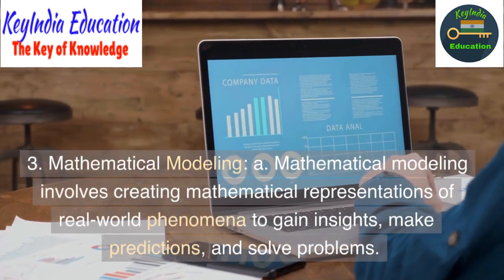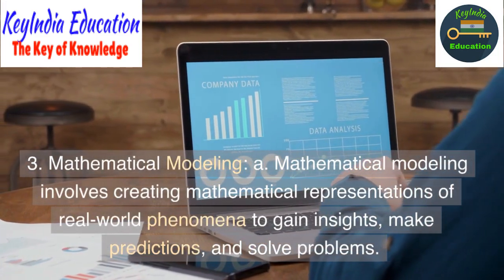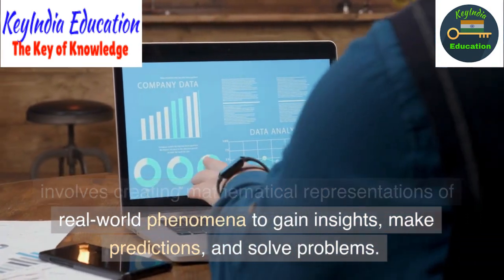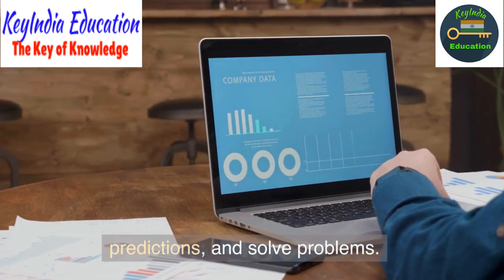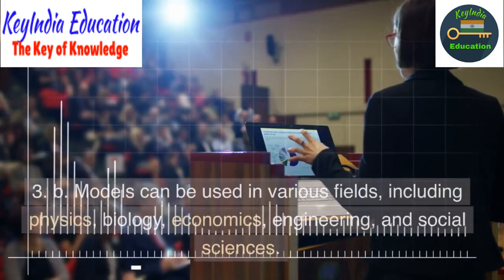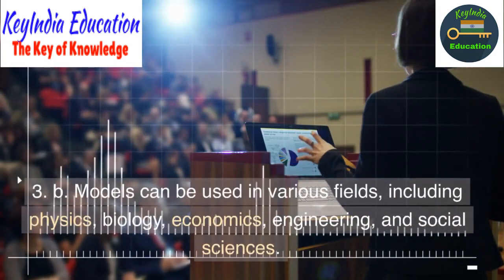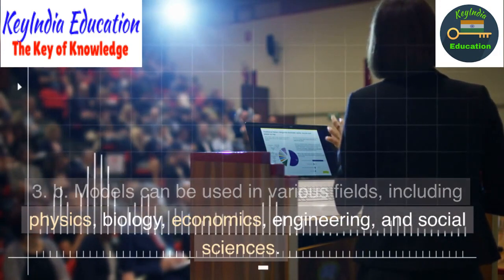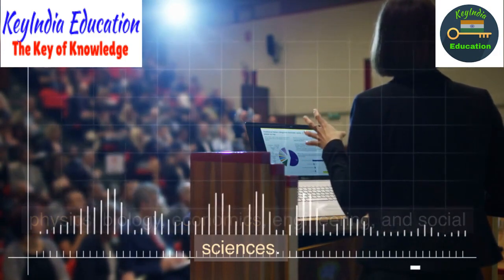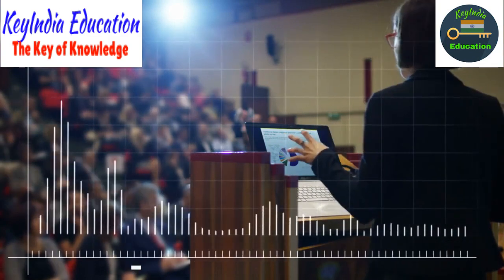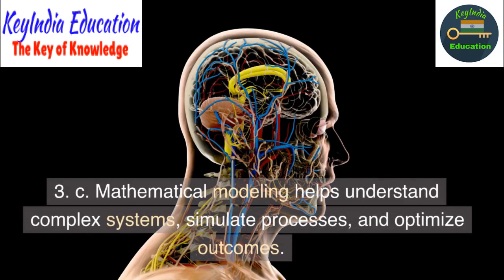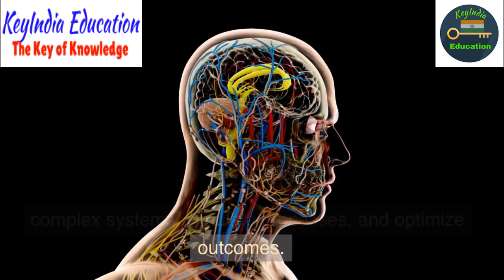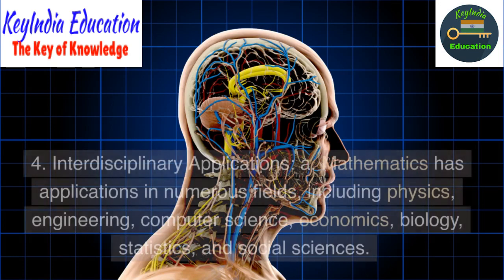Mathematical modeling involves creating mathematical representations of real-world phenomena to gain insights, make predictions, and solve problems. Models can be used in various fields including physics, biology, economics, engineering, and social sciences. Mathematical modeling helps understand complex systems, simulate processes, and optimize outcomes.